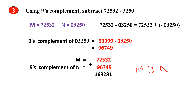You get a positive number as the answer. In 10's complement you would discard the end carry, but in 9's complement method you have to bring this end carry down and add it to the result.